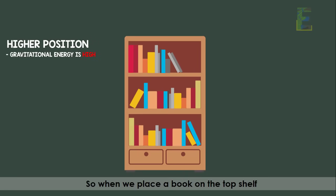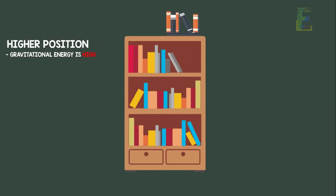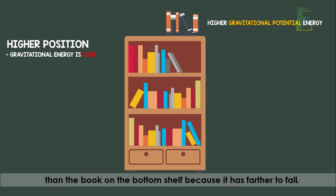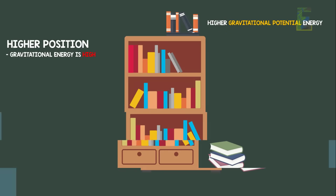For instance, when we place a book on the top shelf, it has a higher gravitational potential energy than a book on the bottom shelf, because it has farther to fall.